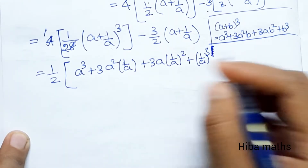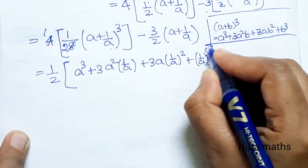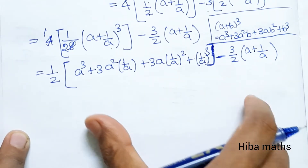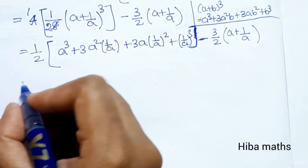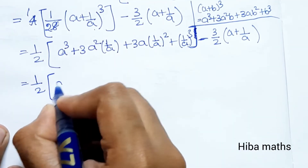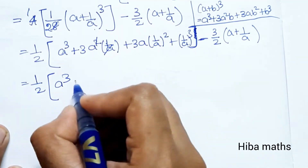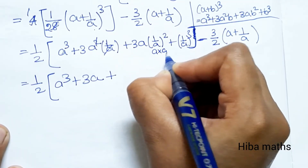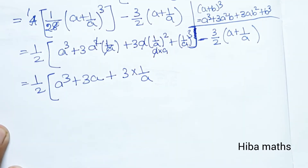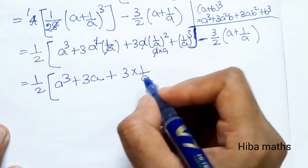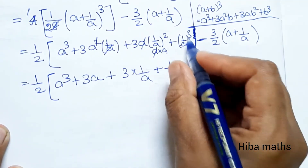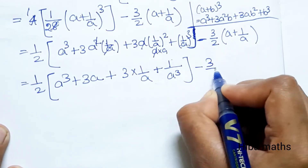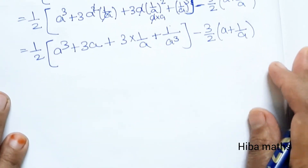Simplifying by cancellation: A square divided by A gives A, and A divided by A square gives 1/A. So this line becomes A cube plus 3A plus 3/A plus 1/A cube, minus 3/2 times (A plus 1/A).